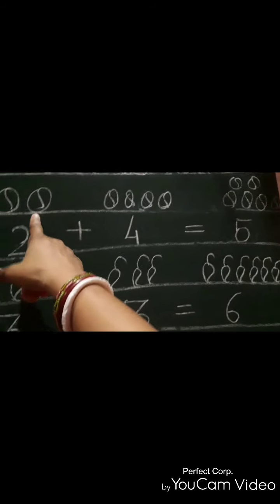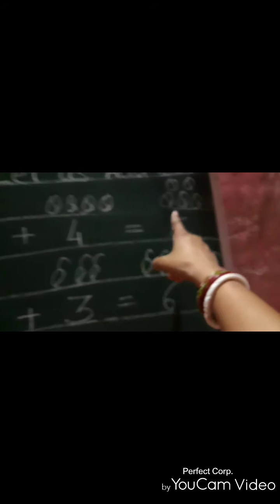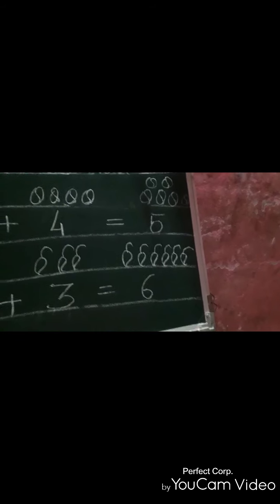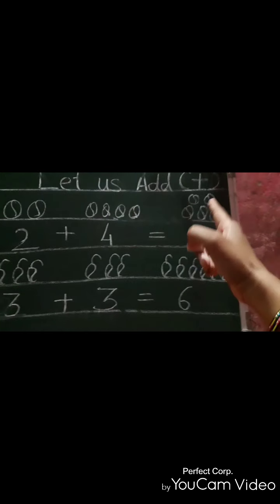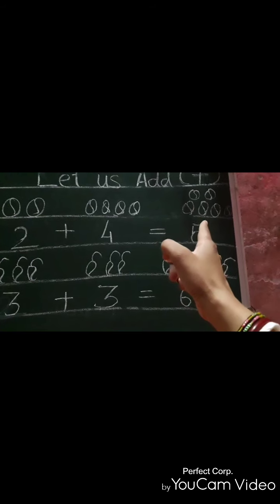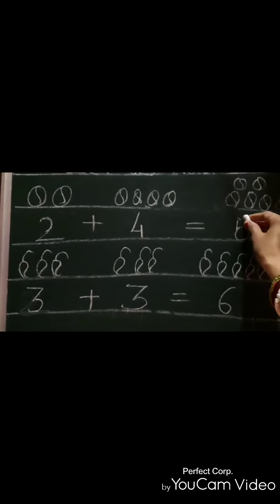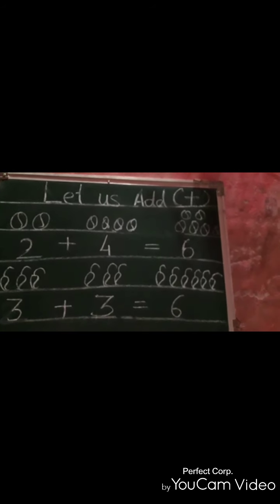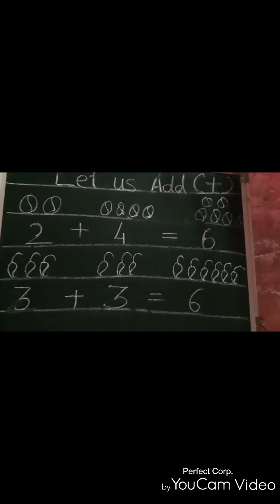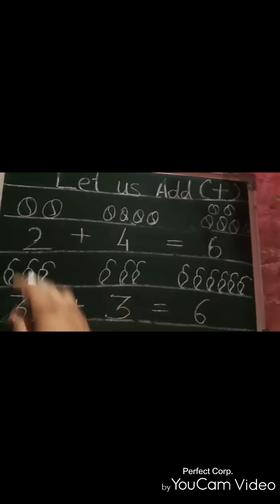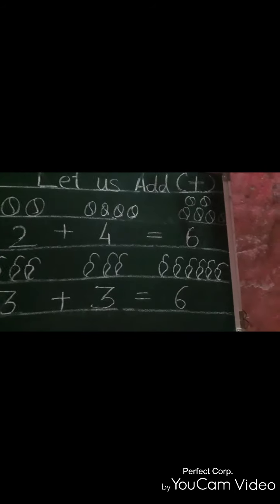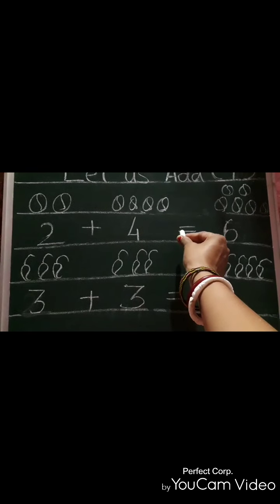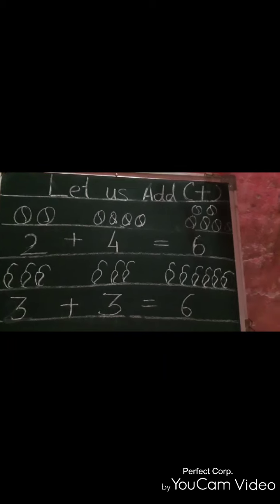When we keep these marbles and those marbles at one place and count, we find that the quantity of marbles is increased — they are more in number. According to the definition of addition, we are doing addition here. We bring the marbles together, and we get an increased amount. The plus sign is the sign of addition, and the equal sign is also used during addition.